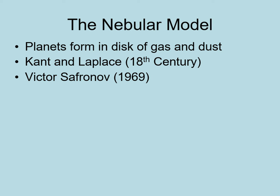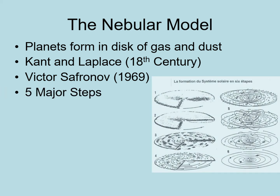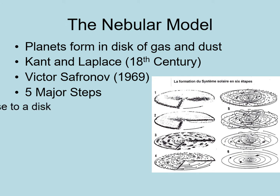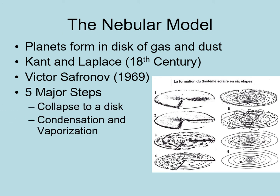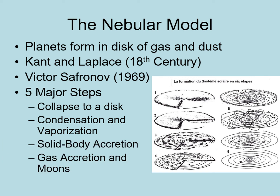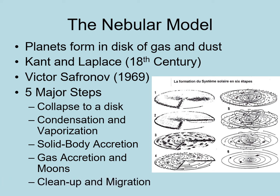Since then, observations of other solar systems currently forming have confirmed large parts of the Safronov model, while suggesting a few important modifications. The steps in the formation of the solar system are: the collapse to a disk, condensation and vaporization, solid body accretion, gas accretion and moon formation, and finally cleanup and migration.